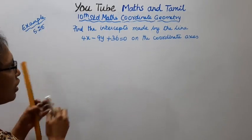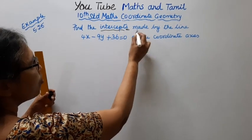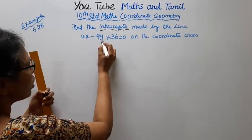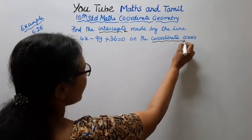Find the intercepts made by the line 4x minus 9y plus 36 equal to 0 on the coordinate axes.